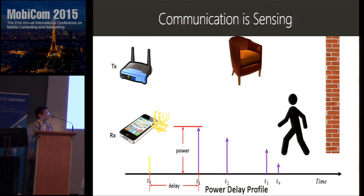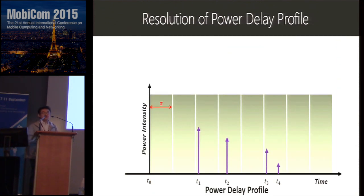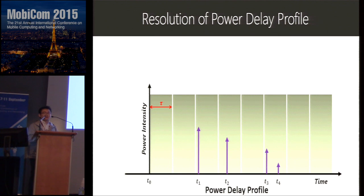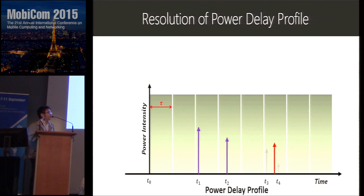However, this is not always accurate when using Wi-Fi because the power delay profile has limited resolution. In the profile, we divide the time dimension into bins, and the width of each bin is the resolution. When two signals — one from a human and one from a wall — arrive within the same bin, they are added together, and only the aggregated power intensity is estimated. So from this power delay profile we can only get three copies of the original signal and some information is lost during aggregation.